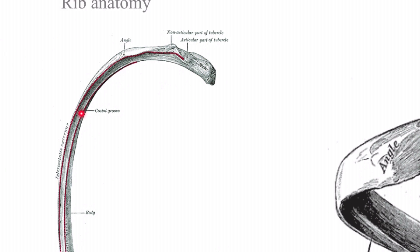This red line is for the attachment of the external intercostals. We are looking at the inferior surface of the rib. The inner red line is for the internal intercostal. Between these two is the costal groove.